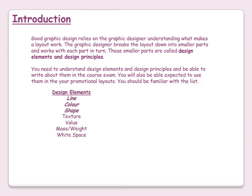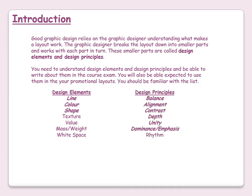In National 5, the only design elements required to be known by pupils were line, colour and shape. In addition to this at Higher, you will now have to know about texture, value, mass, weight and white space. At National 5, you need to know balance, alignment, contrast, depth, unity and dominance. And at Higher, they also add in rhythm.